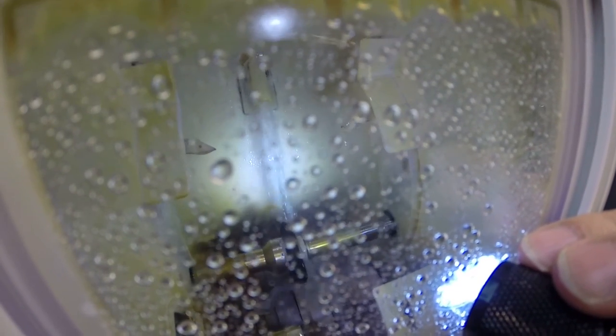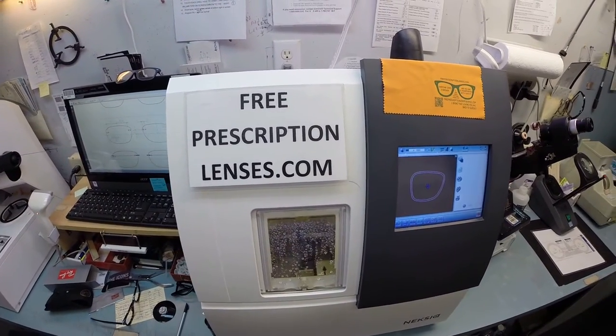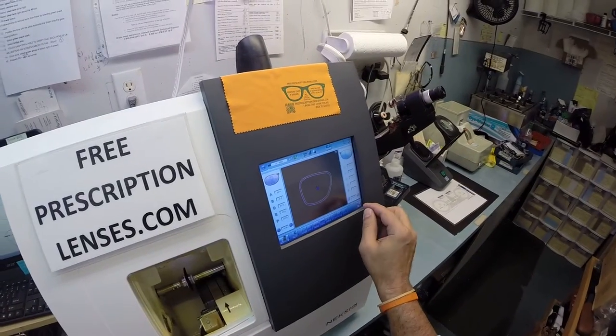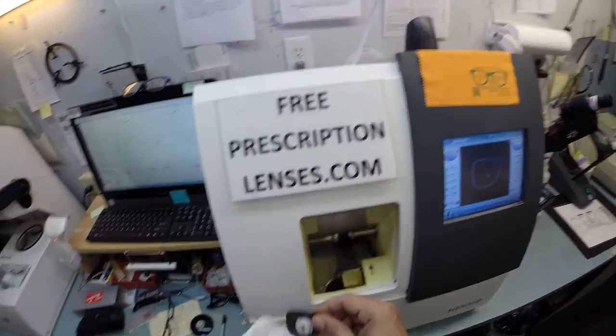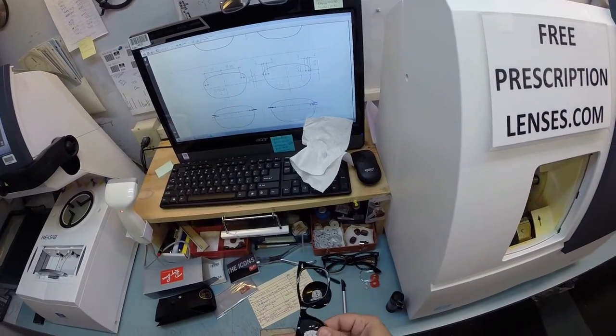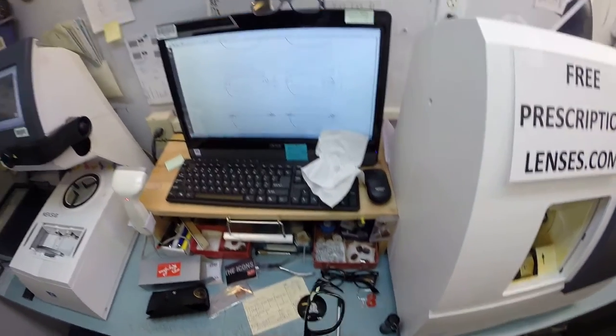The right lens takes a little bit longer. Once we get the size just perfect, we'll flip it over and cut the left. All right, let's open the door up. Open the chuck. And there we go. It pops right in. Let's do the same thing for the left. Hopefully it'll go quicker.